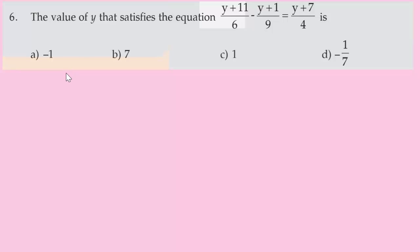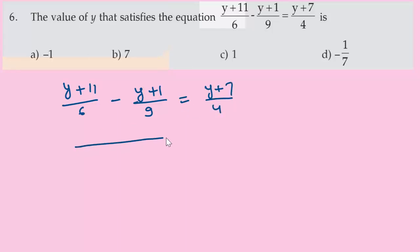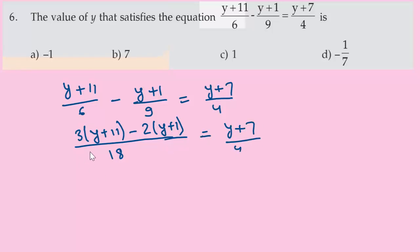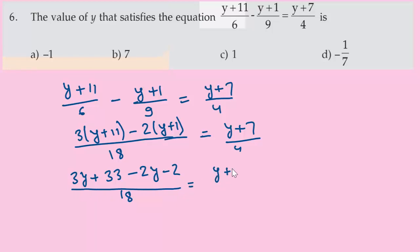We solve for y. The LCM of 6 and 9 is 18. Multiplying through: 3(y+11) minus 2(y+1) over 18 equals (y+7)/4. Expanding: 3y plus 33 minus 2y minus 2 over 18 equals (y+7)/4, giving (y+31)/18 equals (y+7)/4.